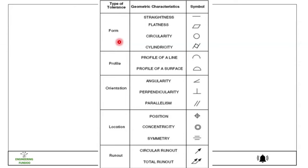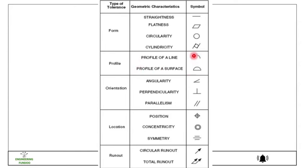In form tolerance we have different geometric characteristics like straightness, flatness, circularity, and cylindricity. Then we have the profile category, which includes profile of a line and profile of a surface. You can see the symbols for each: for straightness we have a straight line symbol, for flatness this is the symbol, and for circularity we have a circular symbol.